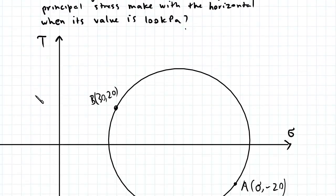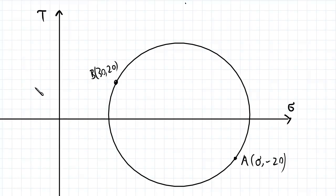Now I've gone ahead and plotted these points already on this Mohr Circle. Don't worry about trying to do this to scale because we don't know what this normal stress is. So we're going to have to solve this Mohr Circle analytically — we can't rely on the graphical procedure in this instance.